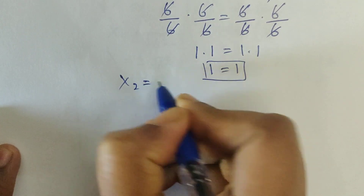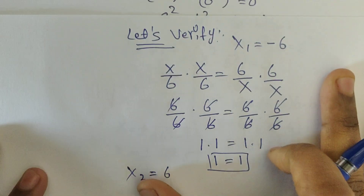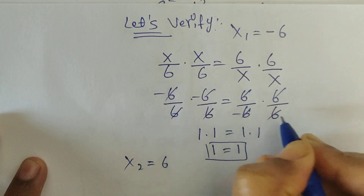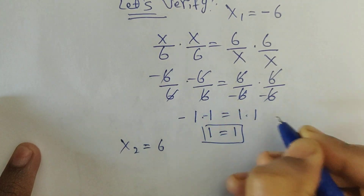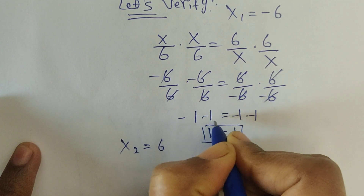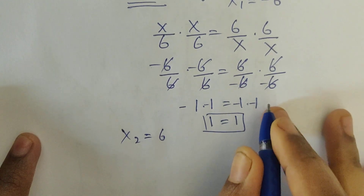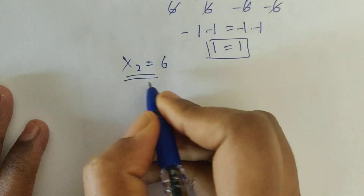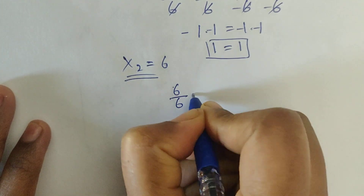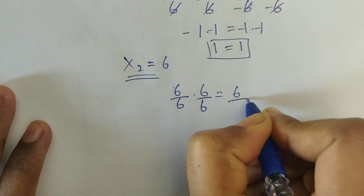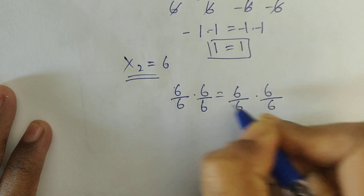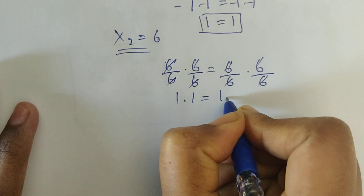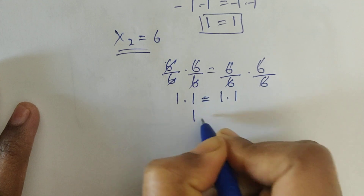Now x2 equals 6. Substituting: 6 by 6 times 6 by 6 equals 6 by 6 times 6 by 6. These both get cancelled, giving 1 times 1 equals 1 times 1, so 1 equals 1. Verified.